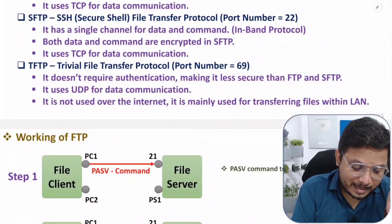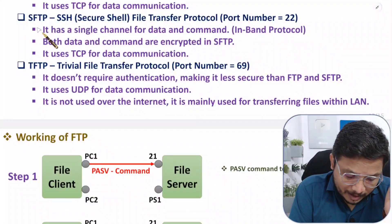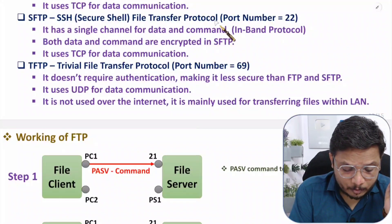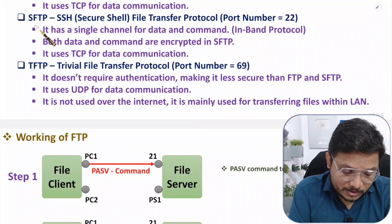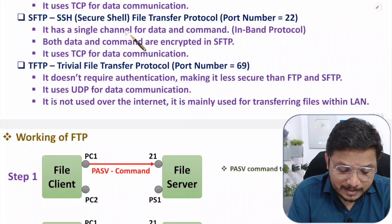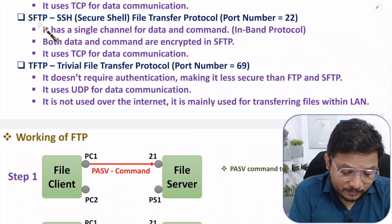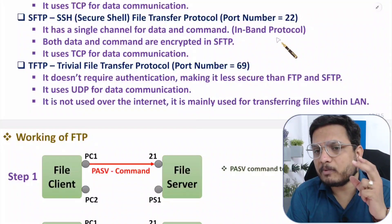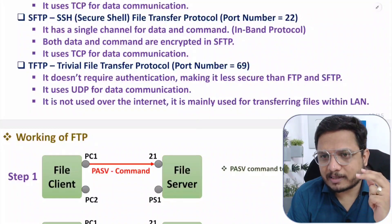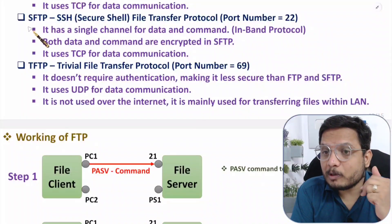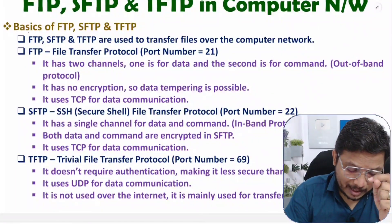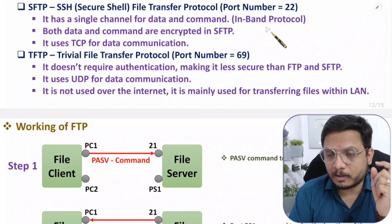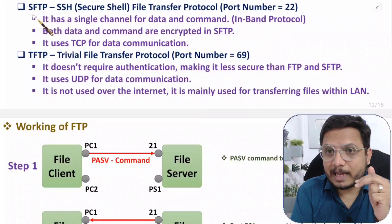The second protocol is SFTP — SSH File Transfer Protocol. SSH means Secure Shell, so it's a secure shell file transfer protocol, and the port number for SFTP is 22. SFTP has a single channel for both data and commands, making it an in-band protocol. This frequently appears in competitive examinations: FTP is out-of-band while SFTP is in-band.